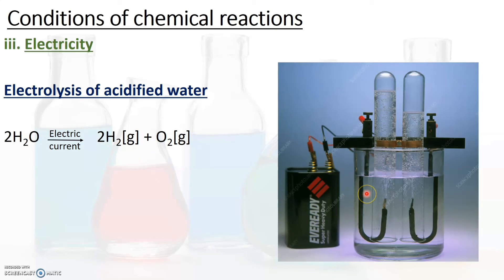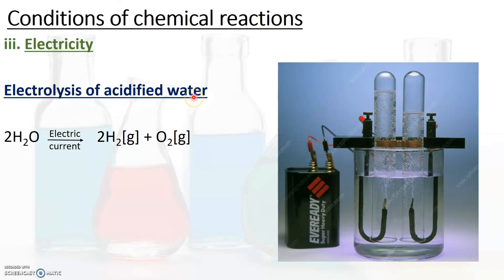Remember that pure water is a poor conductor of electricity. For electricity to pass through and initiate the reaction, we add dilute acid to the water — this is called acidified water. By using acidified water and passing electric current, the current splits or decomposes water to form the products hydrogen and oxygen.